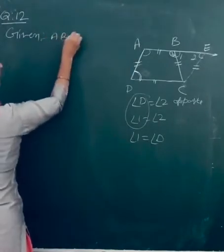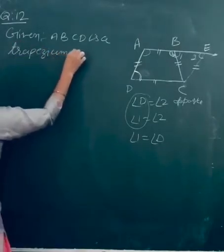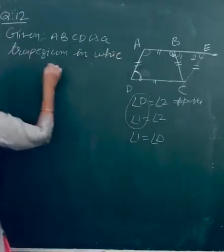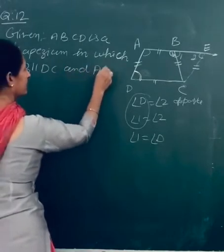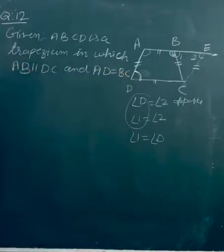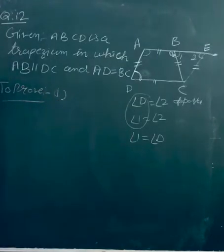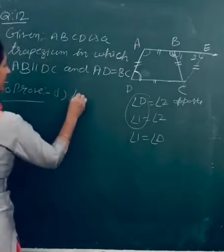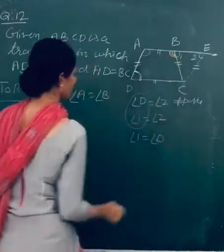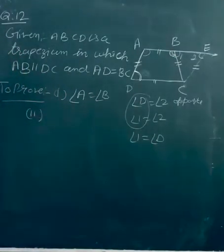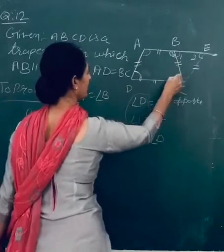Since angle A equal 180 degree, angle 1 equal angle 3. Angle 3 is angle ABC. So angle A equal angle B, which is the first point proved. Second point: angle C equal angle D. We will mark this as 4.